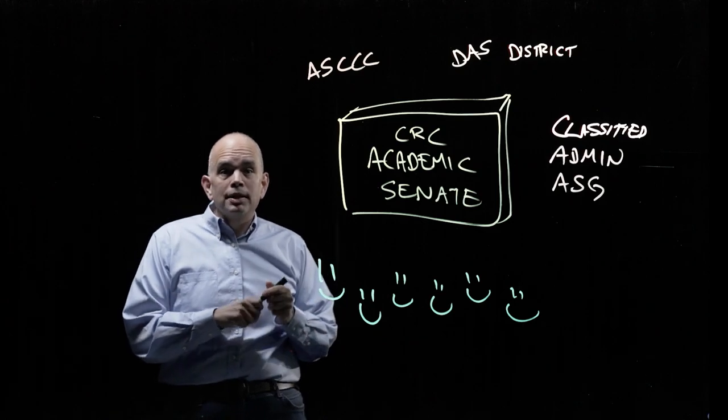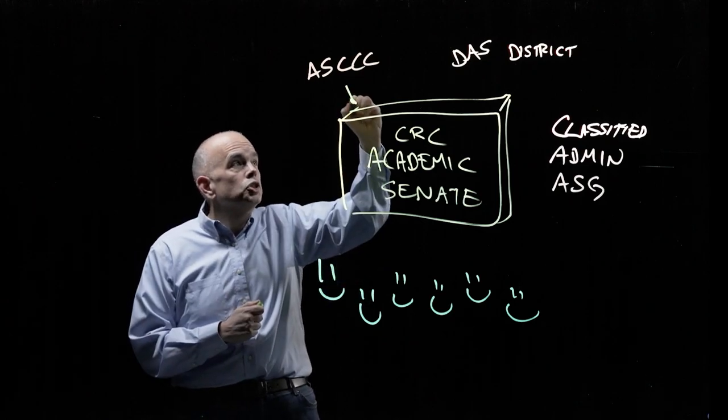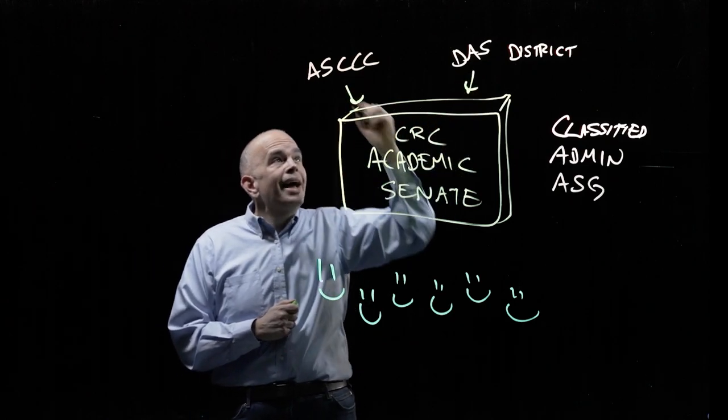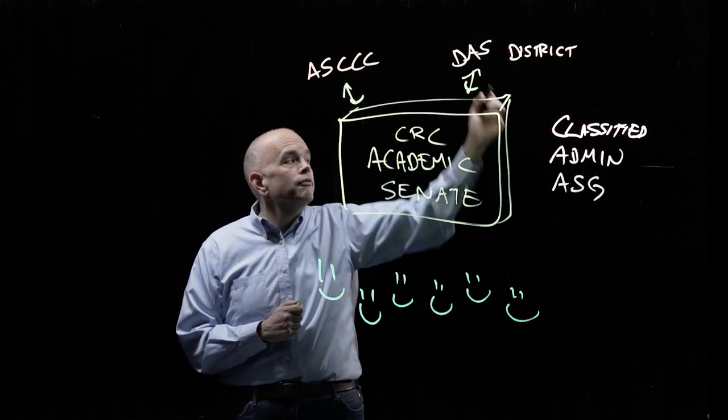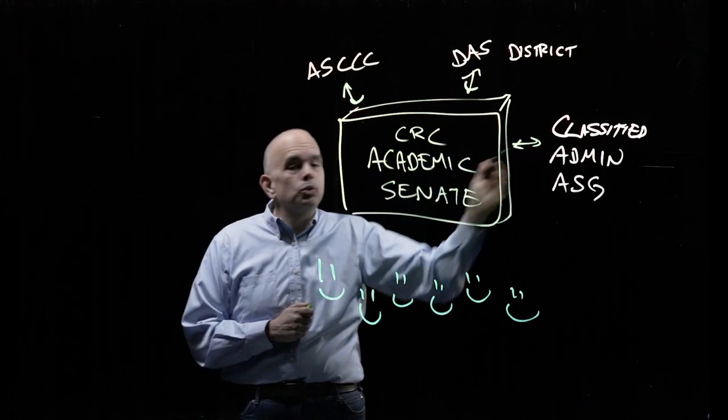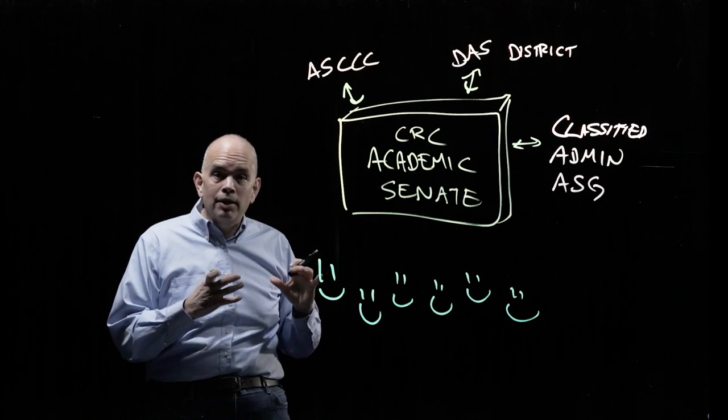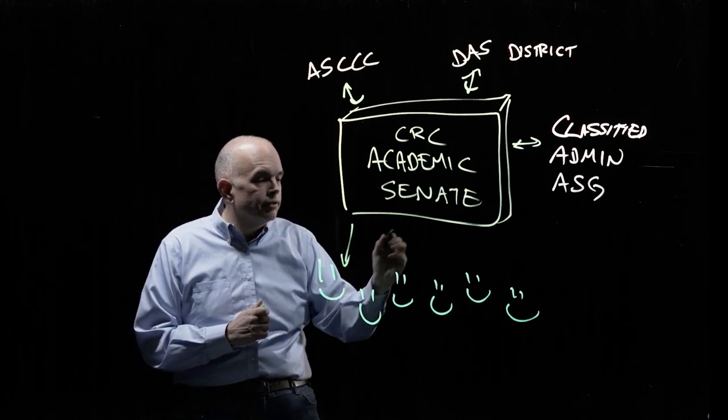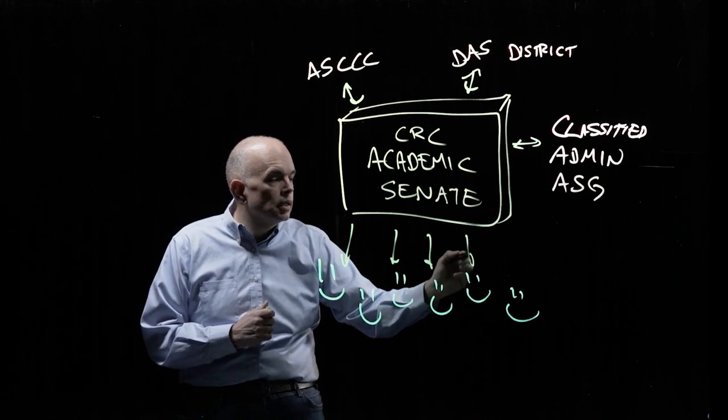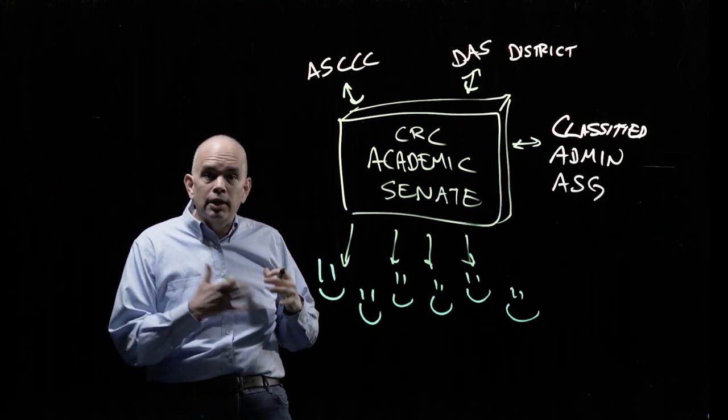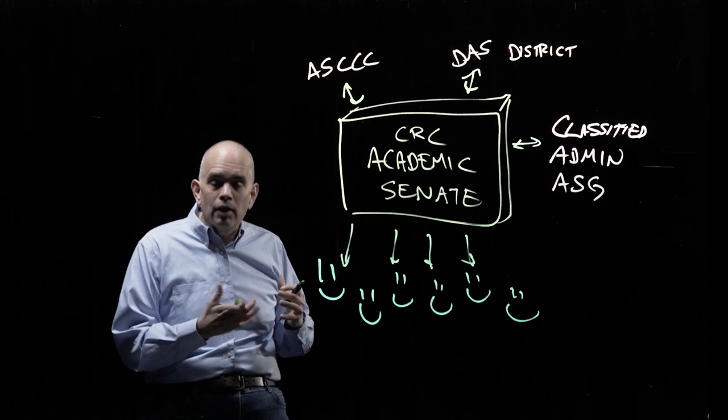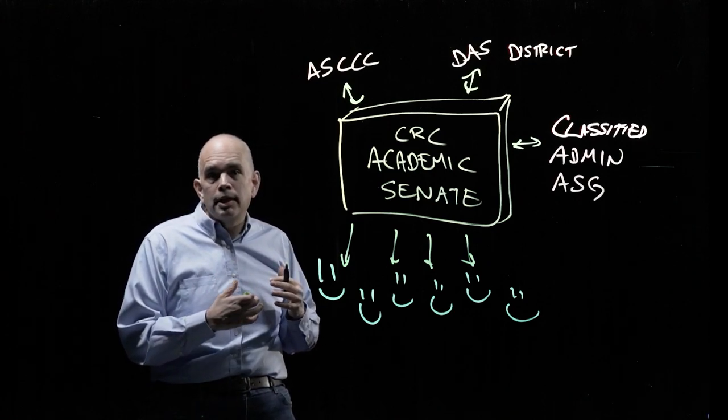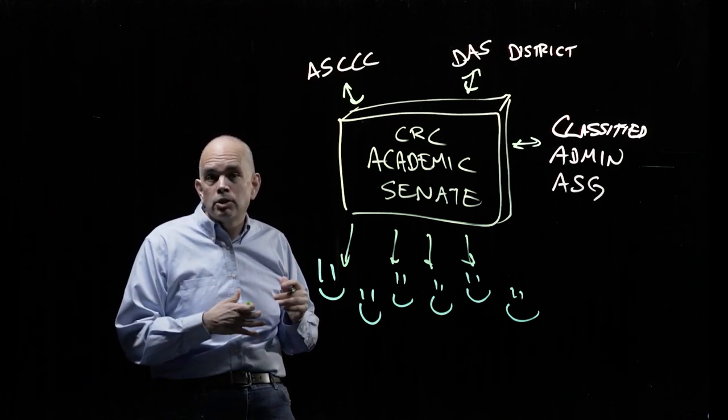So each of these groups is sending information to us, and they're asking for our positions on various interests that are academic and professional matters. We also are having our senators send information to their constituents. The senators represent areas—they are adjunct senate representatives and also the chairs of the various committees on campus.